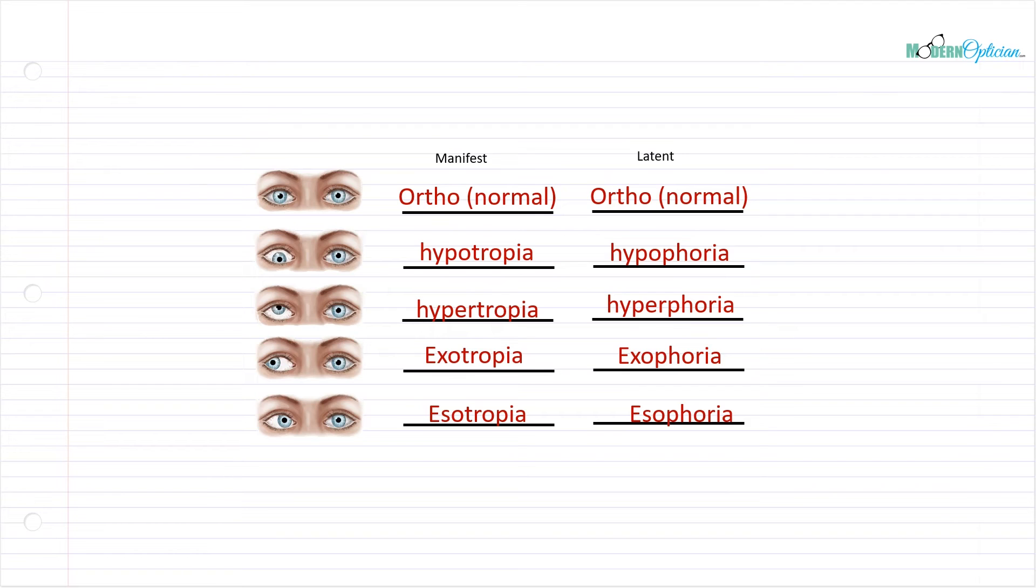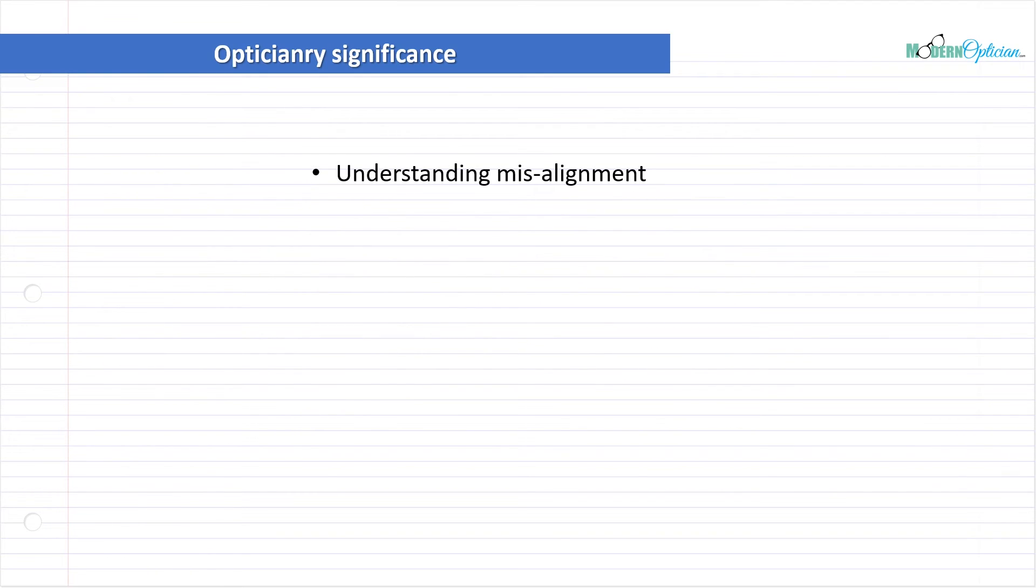So why do we need to know all this stuff? You want to understand misalignment. You want to know the difference between it being present all the time or latent or only present sometimes. You want to understand the difference between comitant and incomitant. You want to understand the concept of direction with hypo, hyper, eso, exo. These are all things you want to understand so you can communicate better. Phoria versus tropia is important to understand because you want to be able to name them right and they have different implications.